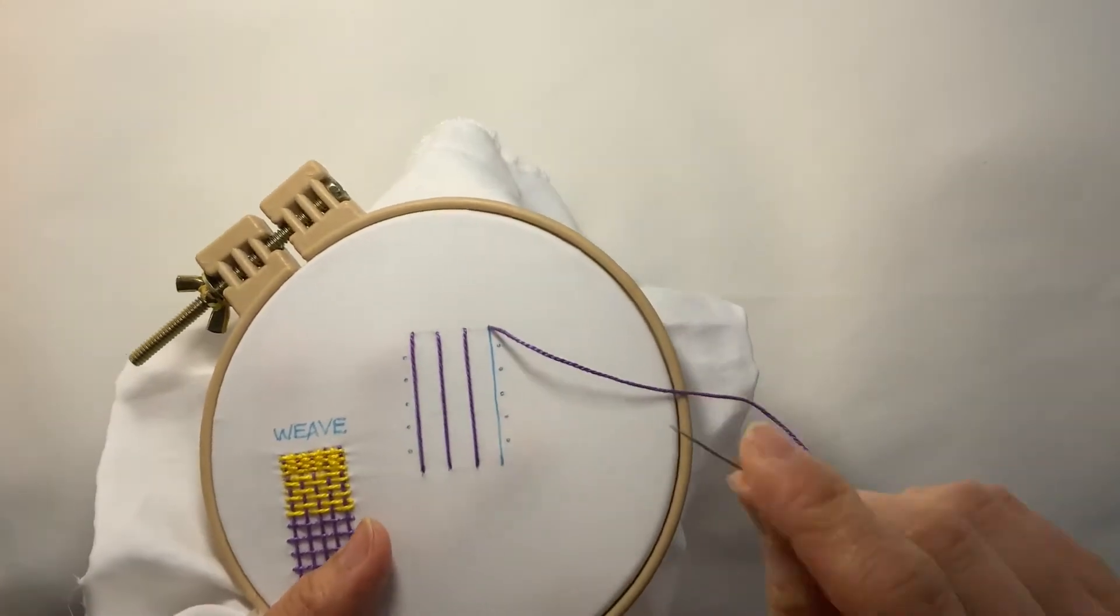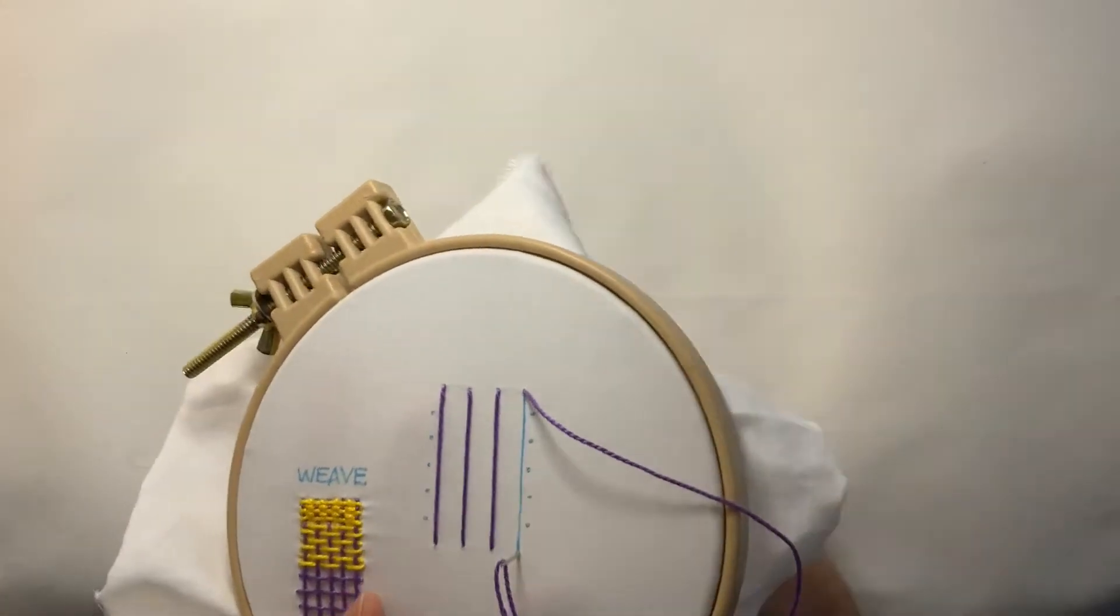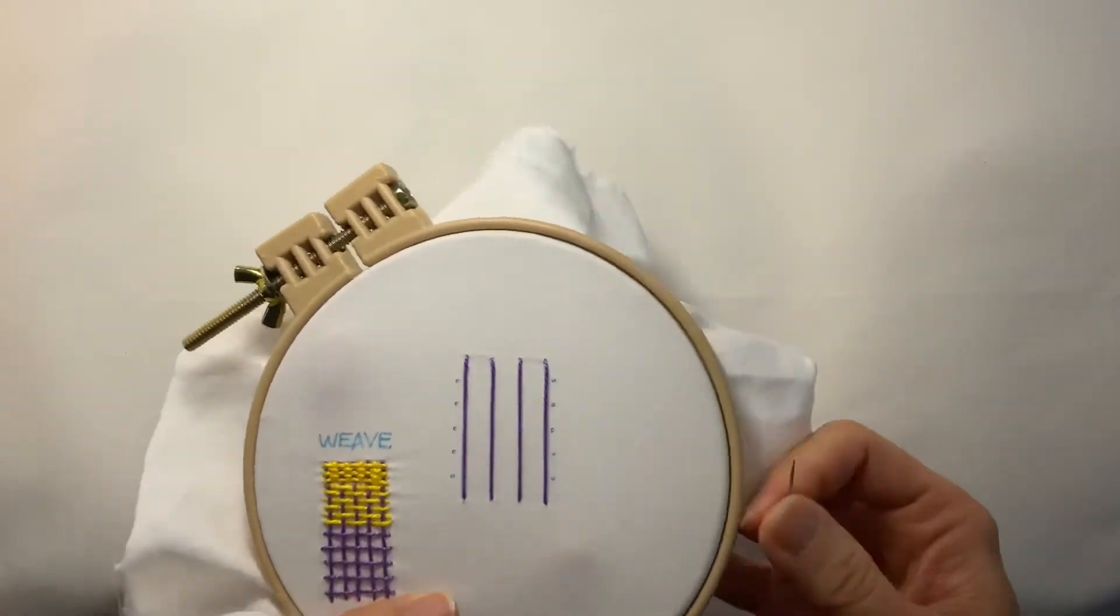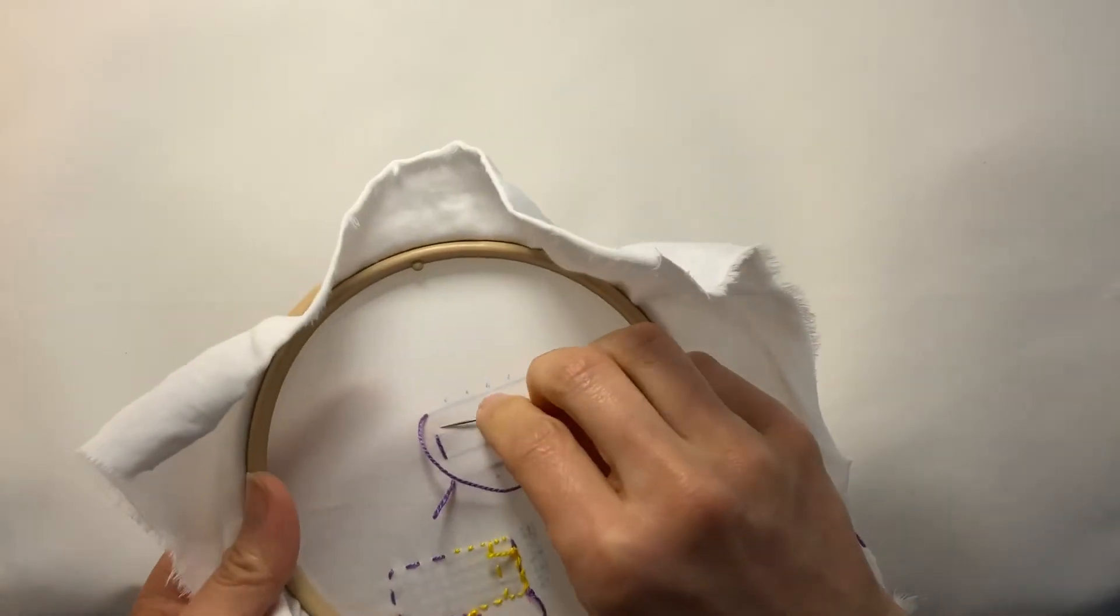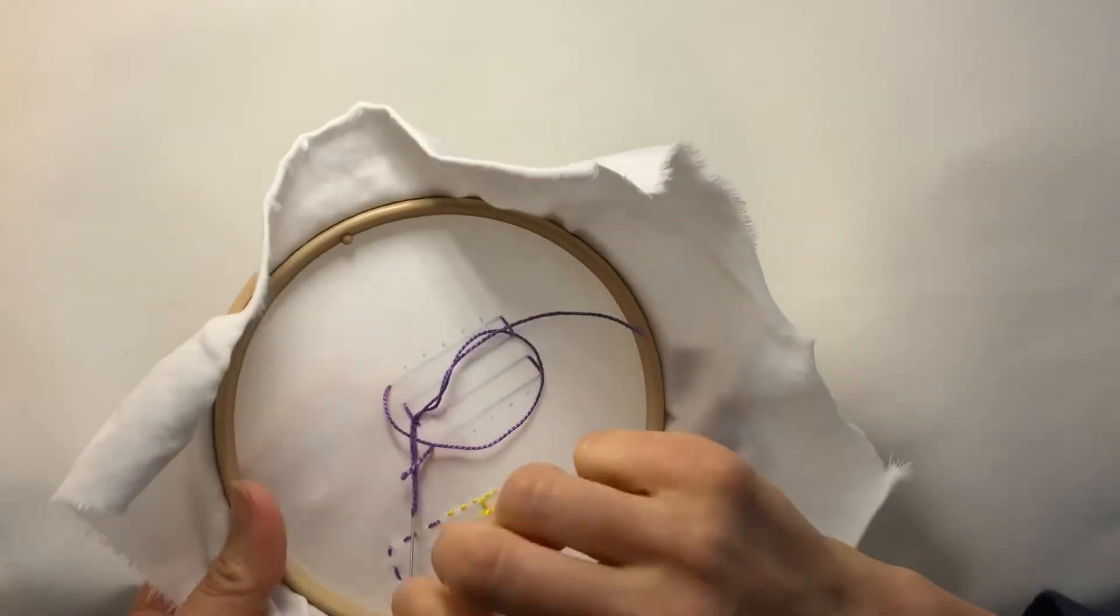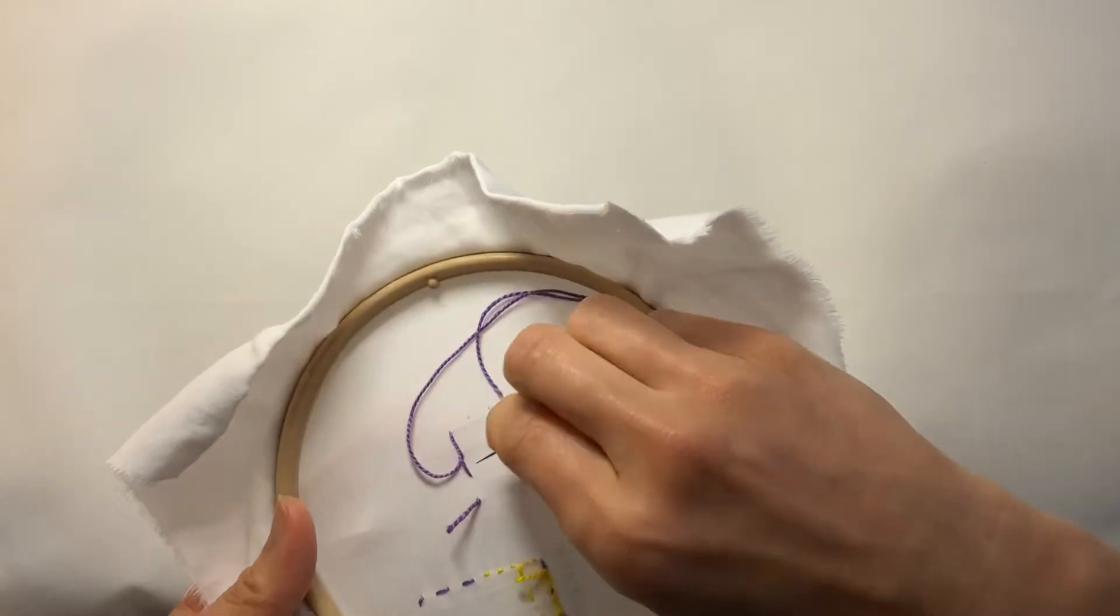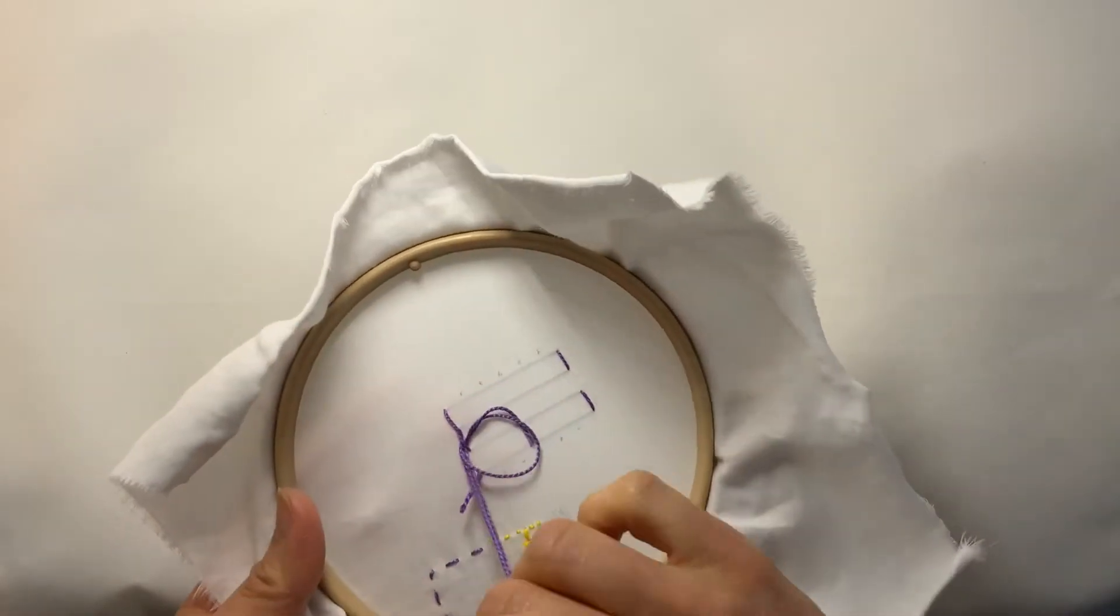Okay, so up now and then back down. All right, so it's important at this point to tie this off and make this nice and secure because you're going to be pulling against these foundational stitches.